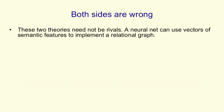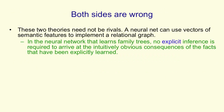A neural net can use vectors of semantic features to implement a relational graph. In the neural network that learns family trees, we can think of explicit inference as: I give you person one, and I give you a relationship, and you tell me person two. And to arrive at that conclusion, the neural net doesn't follow a whole bunch of rules of inference — it just passes information forwards through the net. As far as the neural net is concerned, the answer is intuitively obvious.